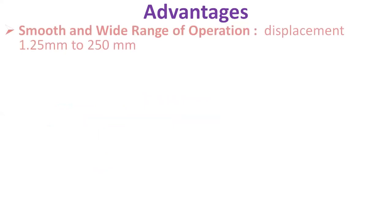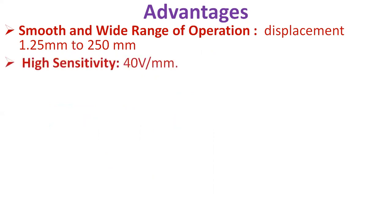What are the advantages of LVDT? Smooth and wide range of operation: LVDT has a very wide range of measurement of displacement. It can measure displacement ranging from 1.25 millimeters to 250 millimeters. It has high sensitivity, which gives high output value so that there is no need for any amplifier circuit for the amplification process. Typically, the sensitivity of LVDT is recorded as 40 volts per millimeter.